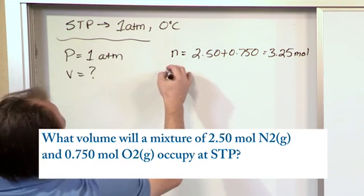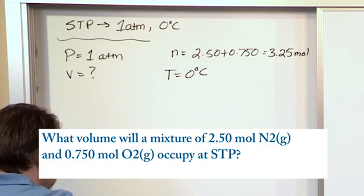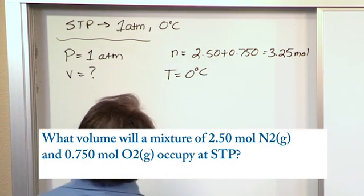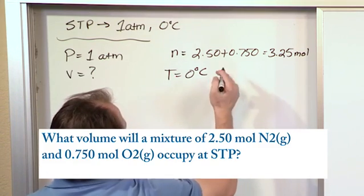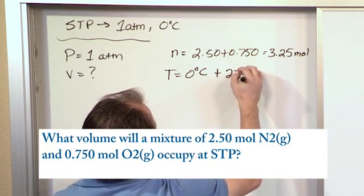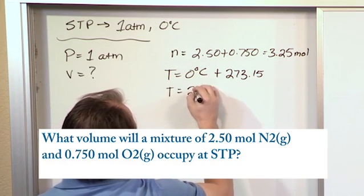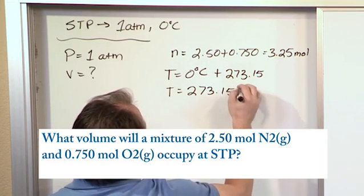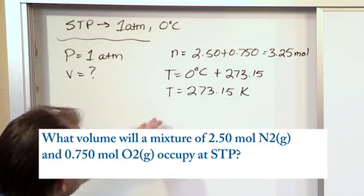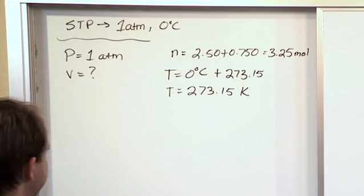All right. Now the temperature is zero degrees Celsius, but you know by now never ever to use a temperature in Celsius. So what we do is we add to that 273.15 to convert to Kelvin. So the temperature we'll actually use is 273.15 Kelvin because we're just adding zero to it. So this is the freezing point of water in terms of Kelvin temperature.